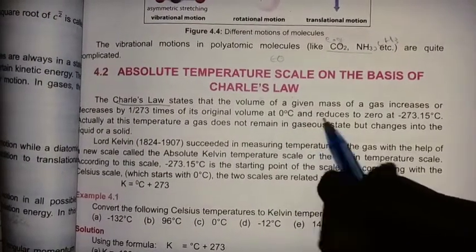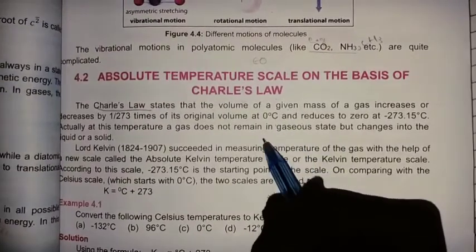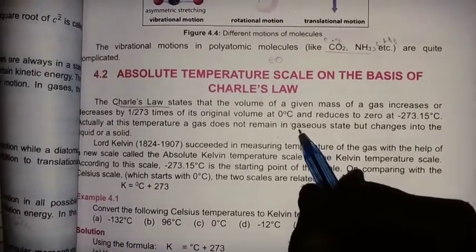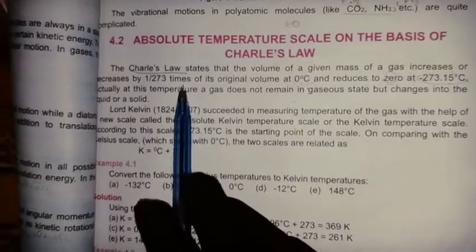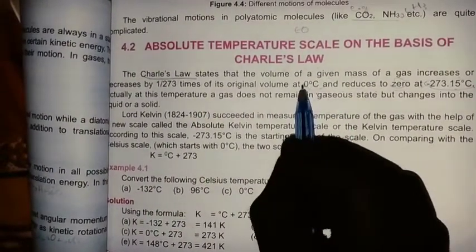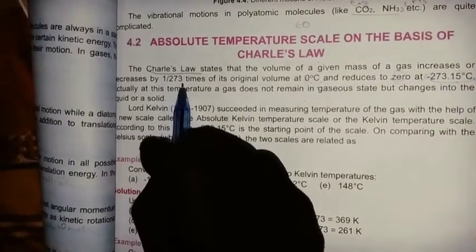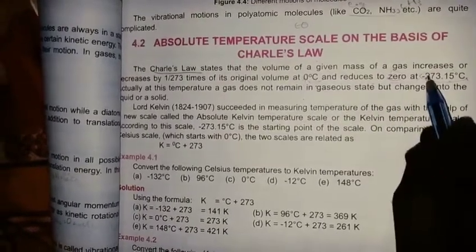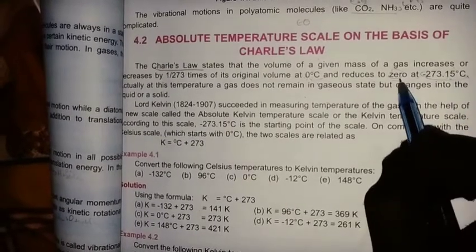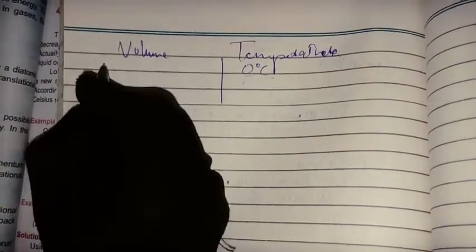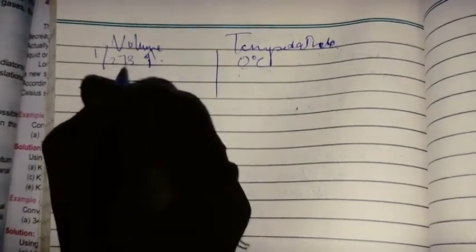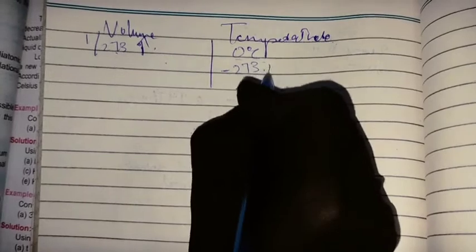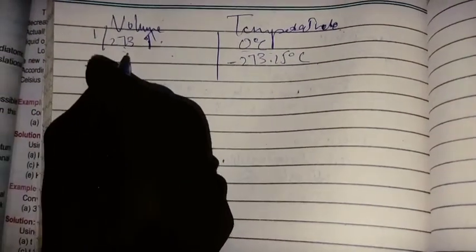This means that if the temperature increases from 0°C to 1°C, the volume of a given mass increases or decreases by 1/273 times of its original volume. If temperature is 0°C then volume increases by 1/273 times; if temperature is minus 273.15°C then volume is 0 cm³.